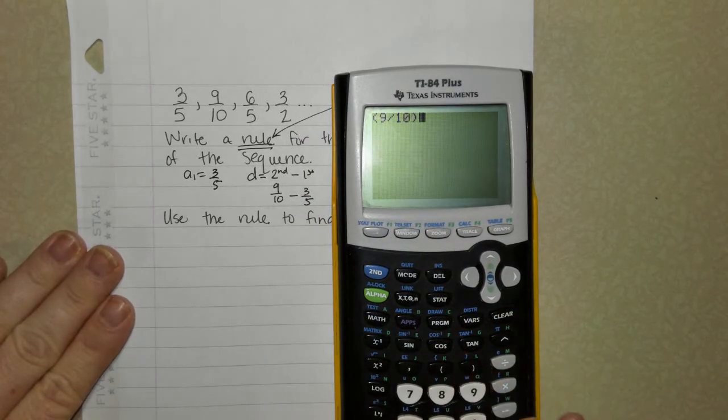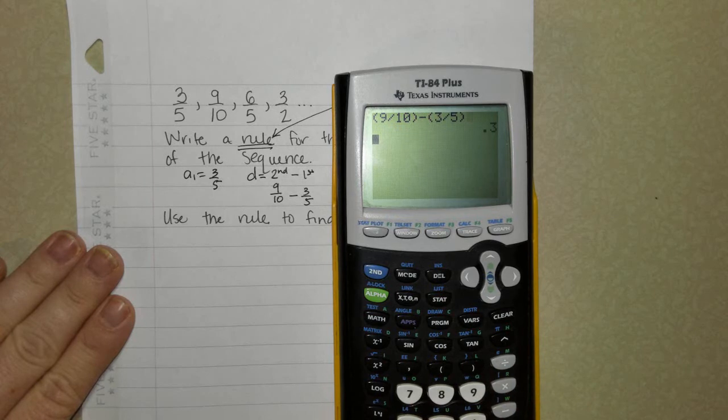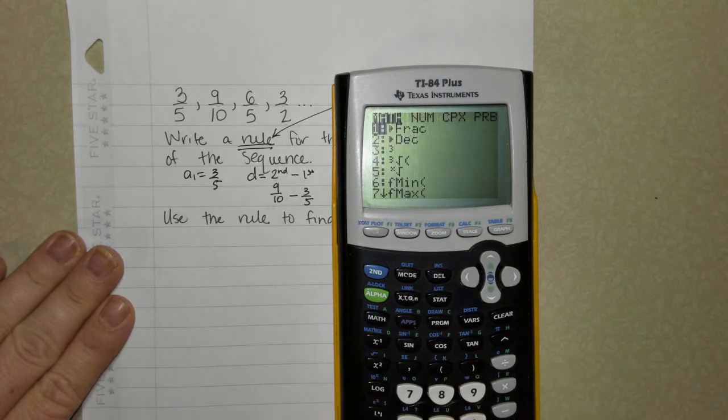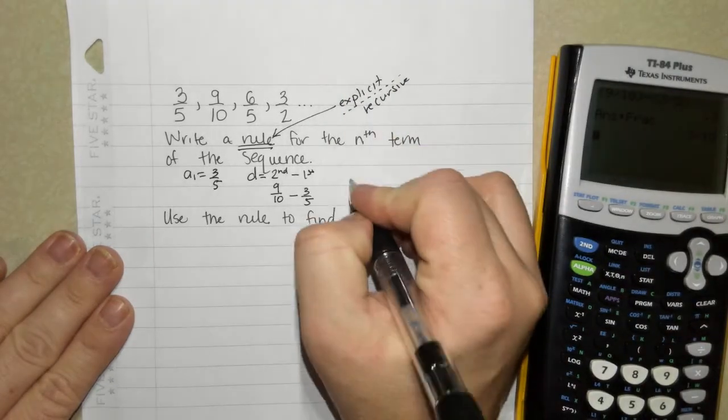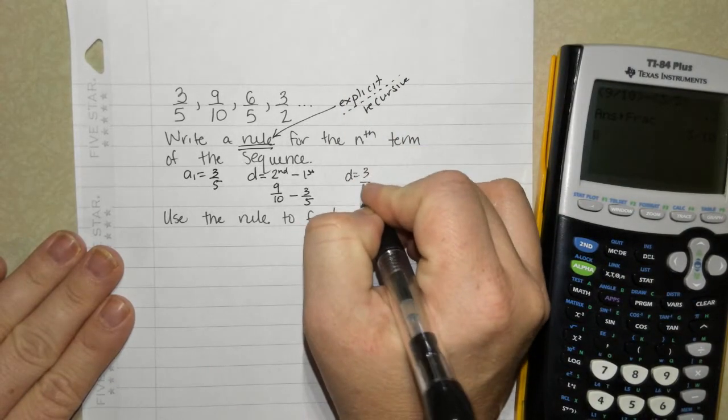Make sure to put your fractions in parentheses. I'm going to turn it back into a fraction. 3 fifths. 3 fifths is the common difference. Oh, sorry. 3 tenths. Excuse me.